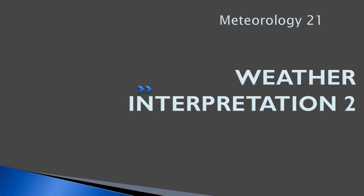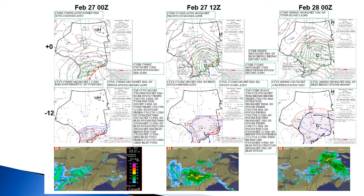Hello everyone, welcome back to freepilotgroundschool.ca. This is the 21st lesson in meteorology. We're going to continue where we look at a new weather system. We're going to discuss weather interpretation like we did in our last lesson and look at another weather system in a different region of the country and try to make sense of what's going on. This weather package was downloaded on February 27th and discusses the weather between midnight Zulu on the 27th and midnight Zulu on the 28th, in the Ontario region.